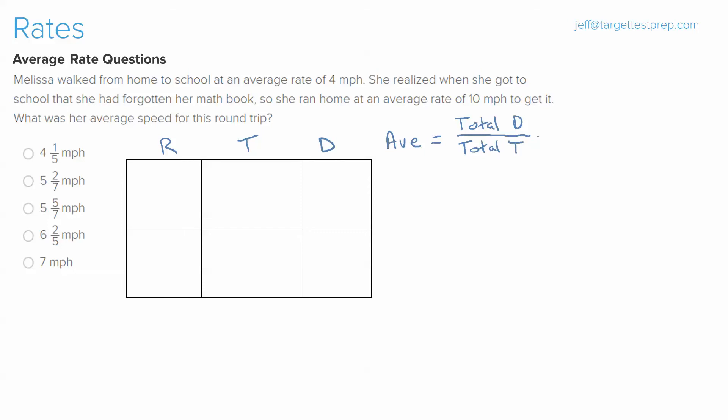Now like any other rate question, our goal is to fill in our chart before plugging into our formula at the end of the problem. So what we're going to do is label our chart with two rows. The first row is what Melissa is doing from home to school, so we'll call that to, as in to school. And then we know that she's going from school back to home, so we'll call that from, which is from school to home.